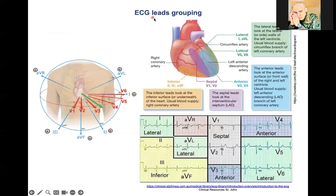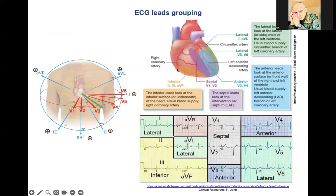We also use ECG grouping in the ECG tracing. Starting with the inferior side of the heart: Leads 2, 3, and AVF evaluate the inferior side of the heart. The inferior leads look at the inferior surface of the heart. The usual blood supply is the right coronary artery. If this right coronary artery is affected, or any segments of the heart associated with it, those pathologies are best seen in these leads.